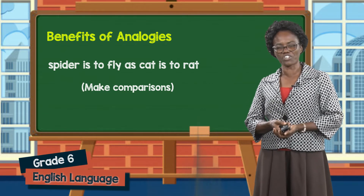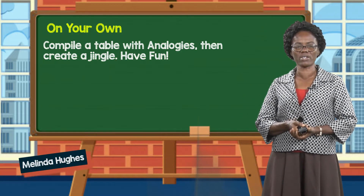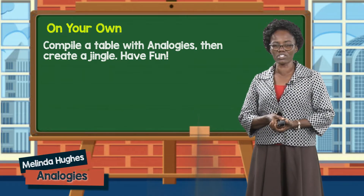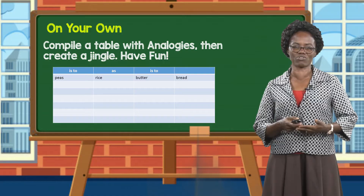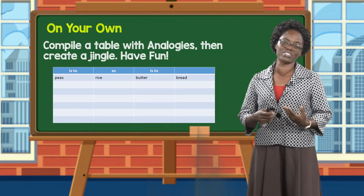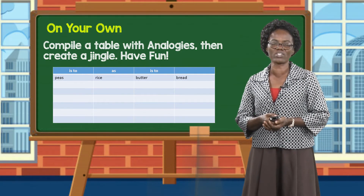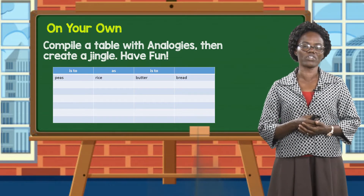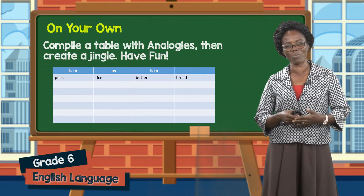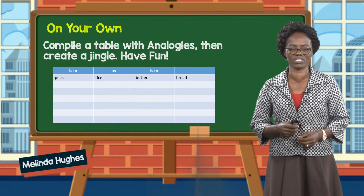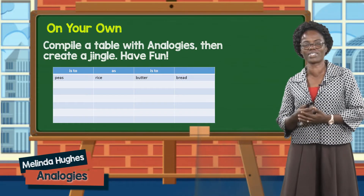So on your own, as grade sixers, you are asked to compile a table with analogies, then create a jingle. We have an example: peas is to rice as butter is to bread. Those of you who love music, you can have a little jingle going on at home. Whilst keeping safe and observing the COVID protocols, you can enjoy using analogies by making up a jingle — peas is to rice as butter is to bread, and bread is to butter as peas is to rice — and go on and on.